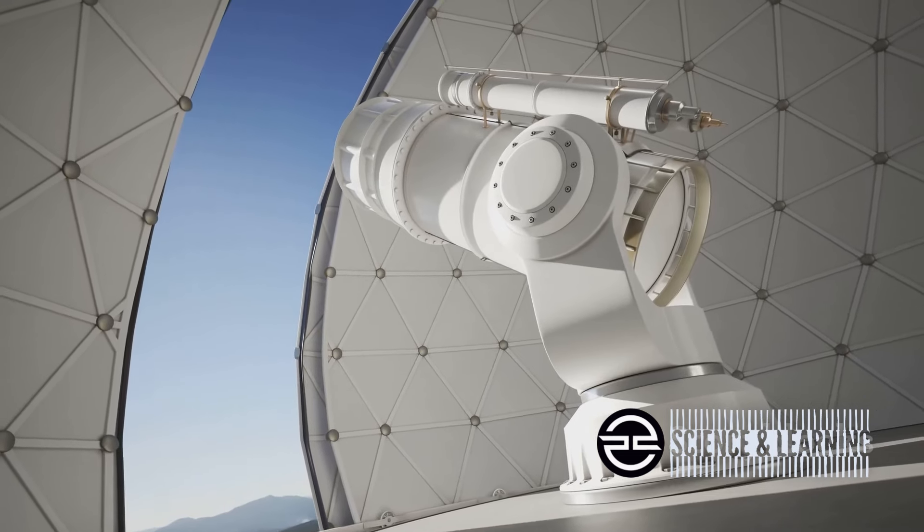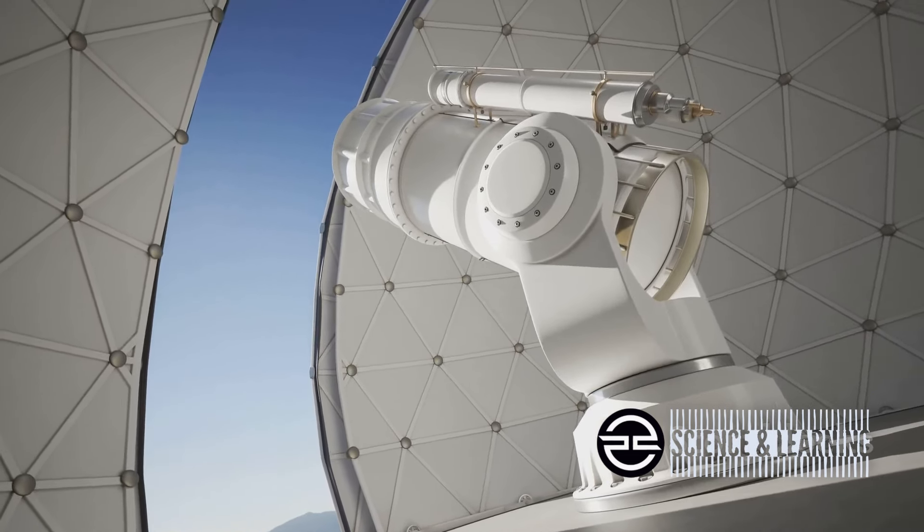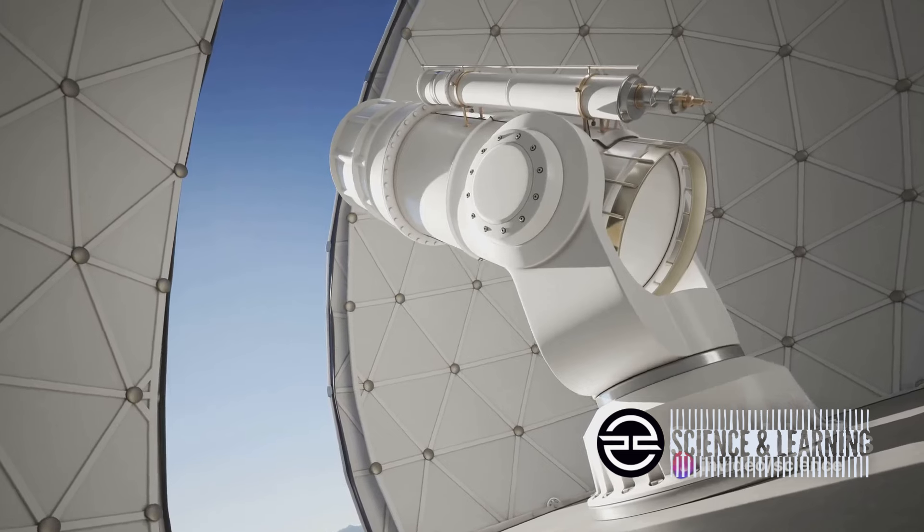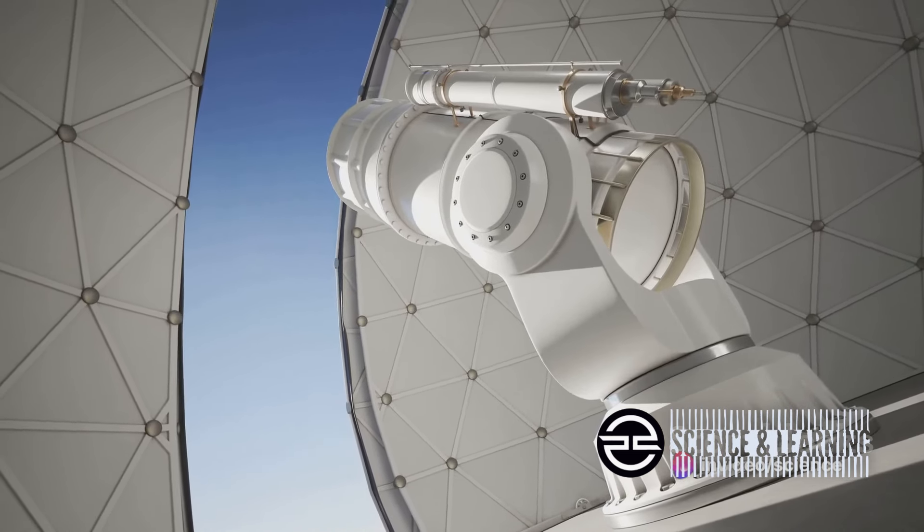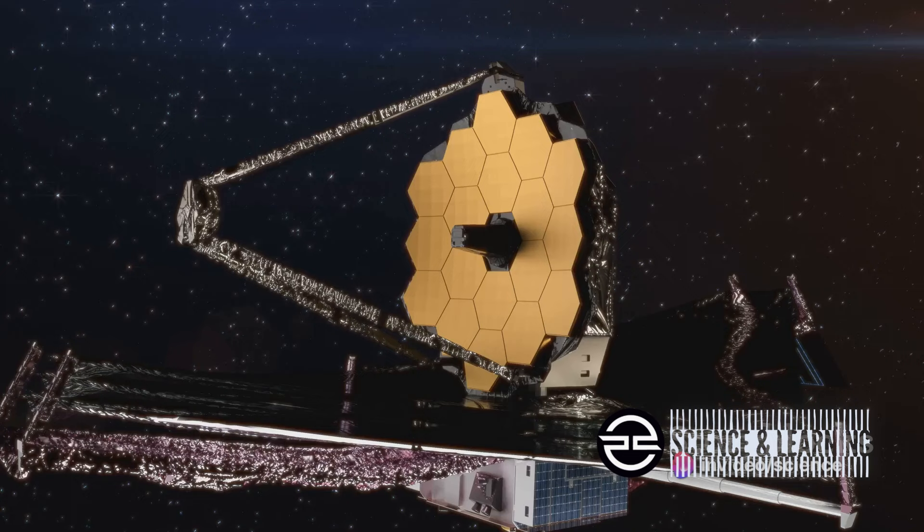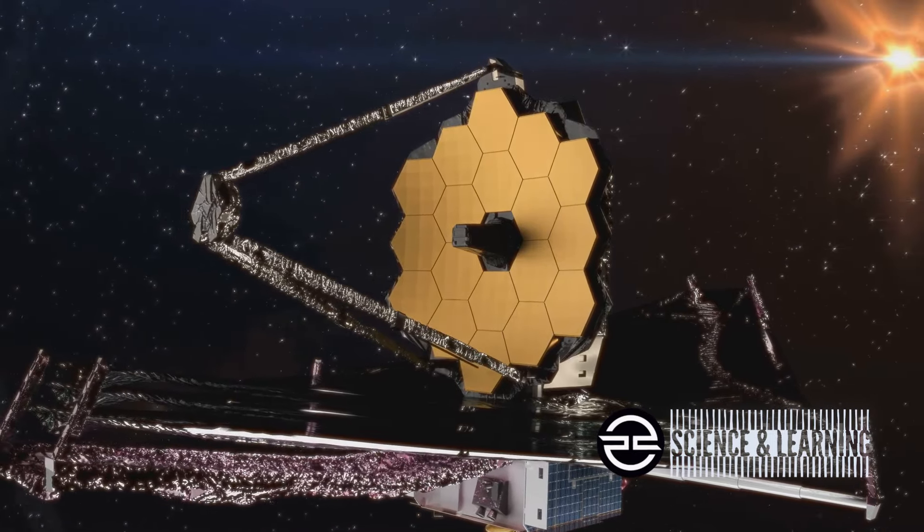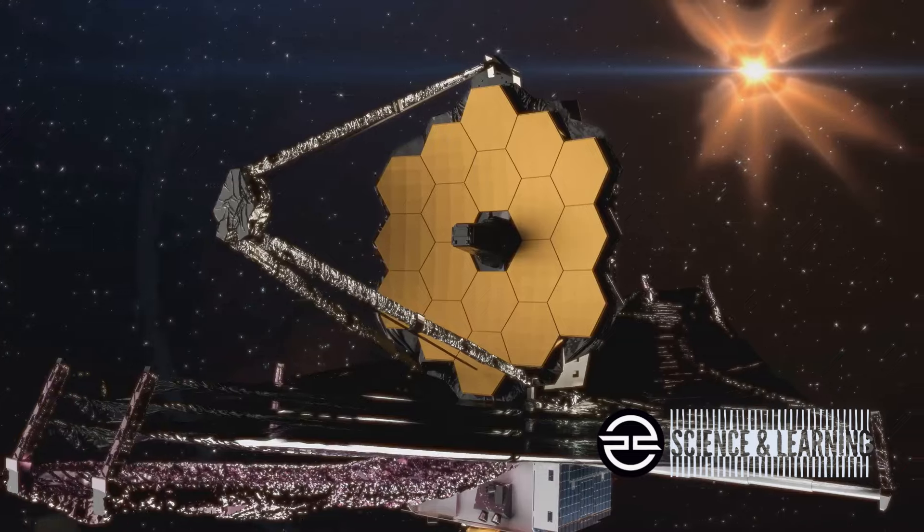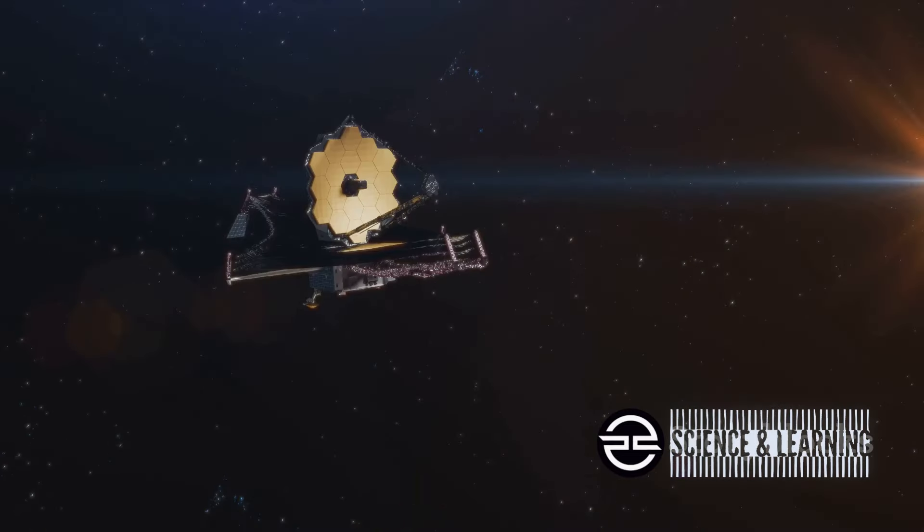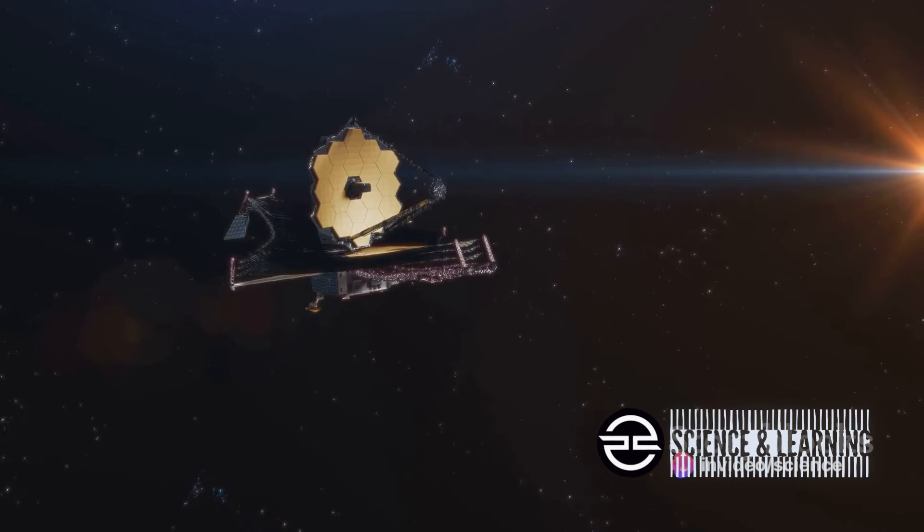The James Webb Space Telescope, or JWST for short, boasts a suite of advanced scientific instruments designed to capture light from distant galaxies. Its mirror alone is about two and a half times larger than Hubble's, allowing the JWST to peer deeper into the cosmos and see further back in time than ever before.